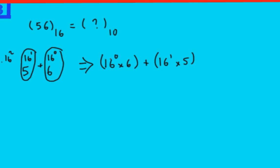16 to the power of 0 is 1. So 1 times 6, plus, 16 to the power of 1 is 16. 16 times 5. This will definitely give you a 6, plus, this will give you 80, and in total, you will get 86.